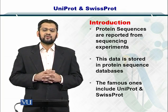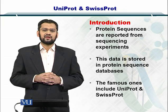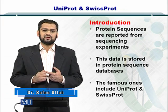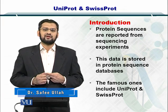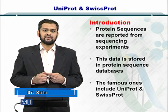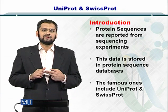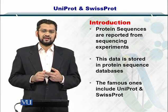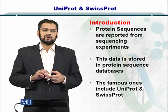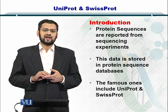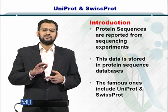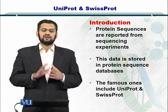So once you get a protein, you want to sequence it. There are two ways to sequence the protein. The first one is Edman degradation, and the second one is mass spectrometry. We'll be looking at the details for each one of these techniques later, but for now it is enough to understand that these two techniques can be used to sequence any protein that you may have in your sample.